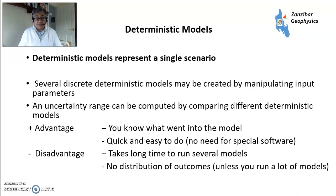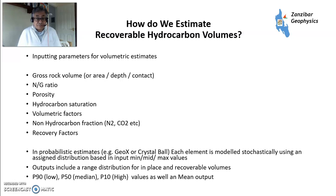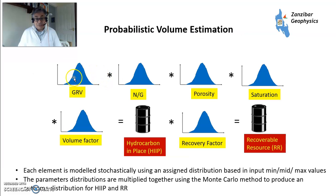Whereas a stochastic model gives you potentially thousands. In stochastic modeling with GeoX or Crystal Ball, each element — the gross rock volume, the net to gross, the porosity, the saturation, the volumetric factors, the gas expansion factor or shrinkage factor, the non-hydrocarbon fraction if you have significant portions of nitrogen or CO2, and the recovery factors — are all modeled stochastically. You create a distribution for all of these and get an outcome with P90, which is the low case, P50, which is the median, P10, which is the high case, as well as the mean — the arithmetic average of all of the above.